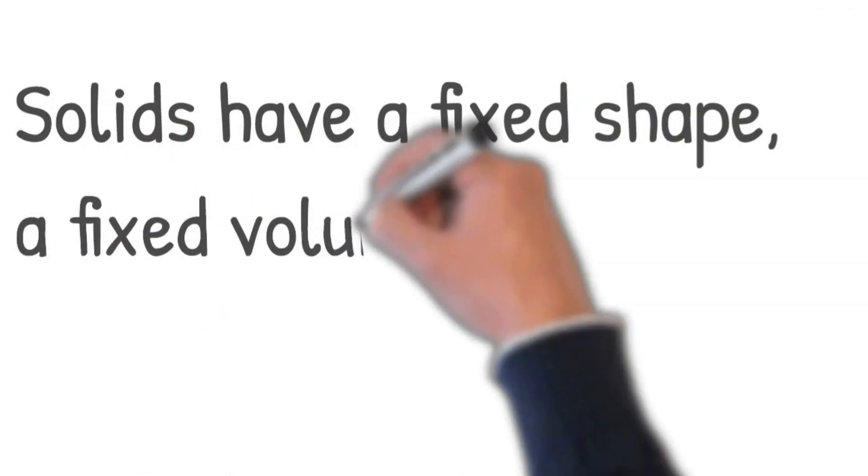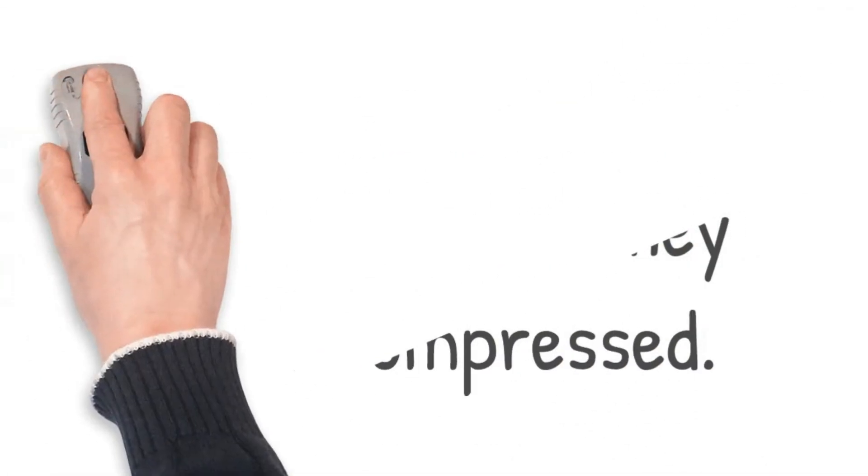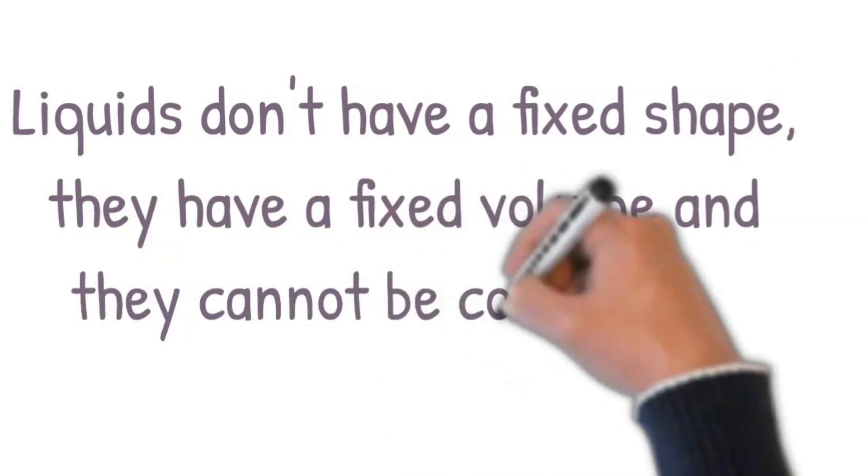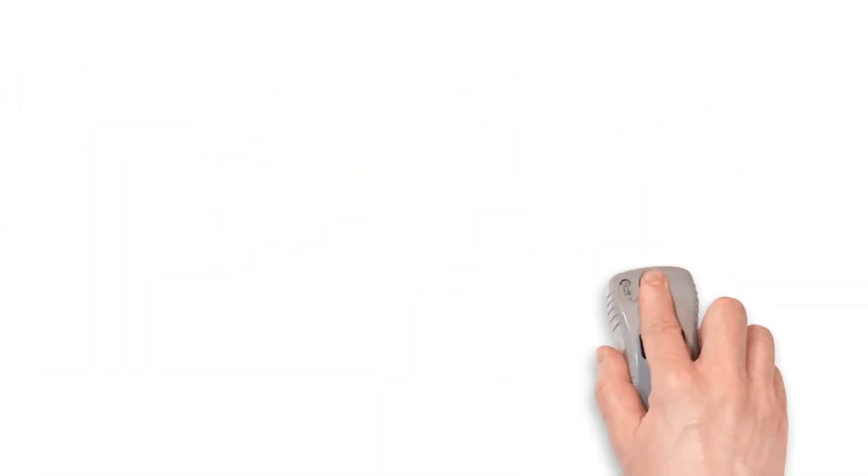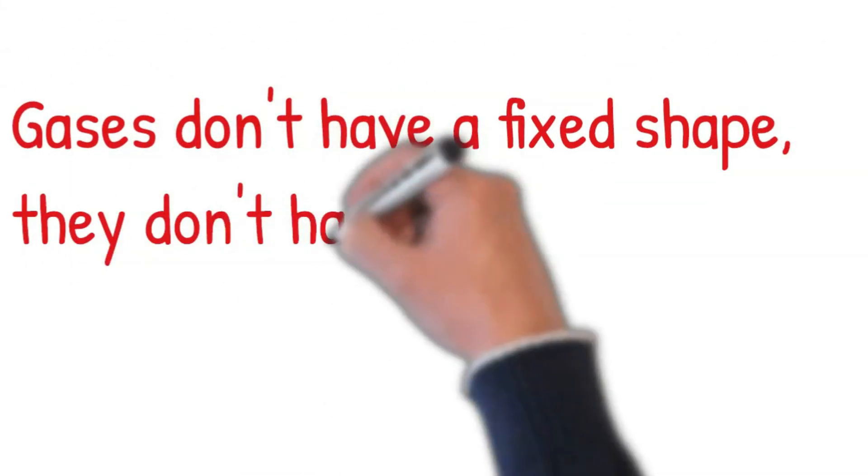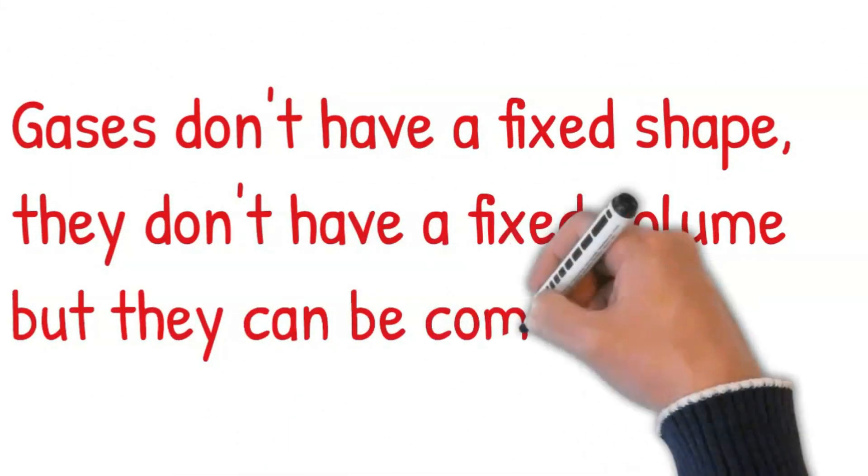Solids have a fixed shape, a fixed volume, and they cannot be compressed. Liquids don't have a fixed shape, they have a fixed volume, and they cannot be compressed. Gases don't have a fixed shape, they don't have a fixed volume, but they can be compressed.